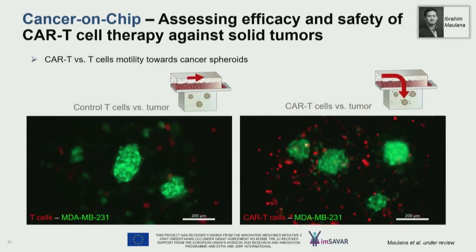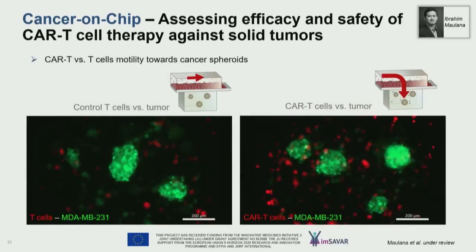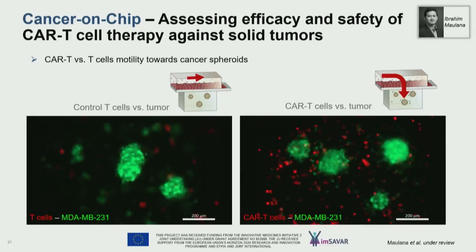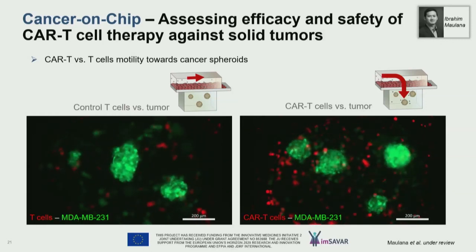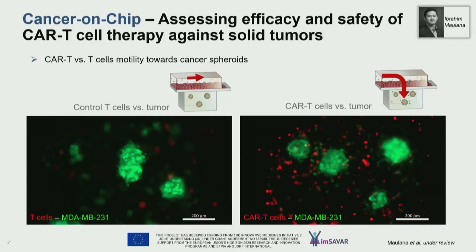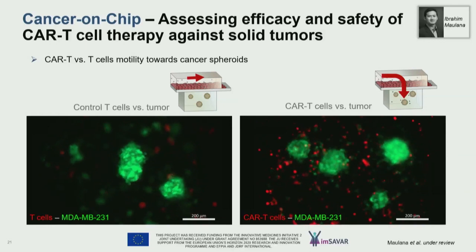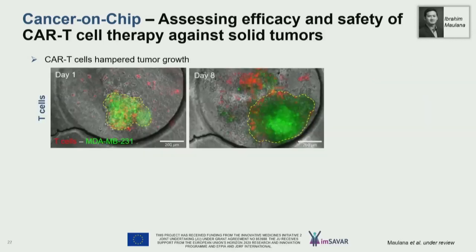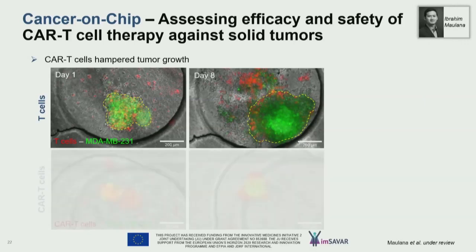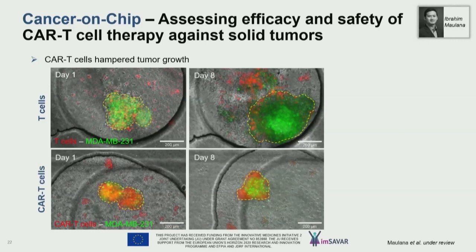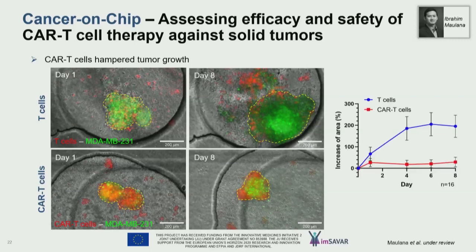One of the first things to look at was recruitment. We labeled the T cells and CAR T cells from the same donor in red, focused on the tumor compartment. You can see only a few T cells are recruited, and many are just flowing through the system. In the case of the CAR T cells, you can immediately see much higher recruitment. This also shows a strong impact on tumor growth: with T cells, the tumor still grows over eight days; with CAR T cells, tumor growth is strongly inhibited.